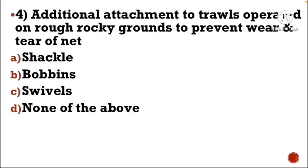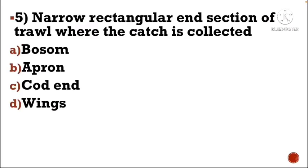Next question: Additional attachment to trawls operated on rough rocky grounds to prevent wear and tear of net — Option A: shackle, Option B: bobbins, Option C: swivels, Option D: none of the above. The correct answer is Option B, bobbins.